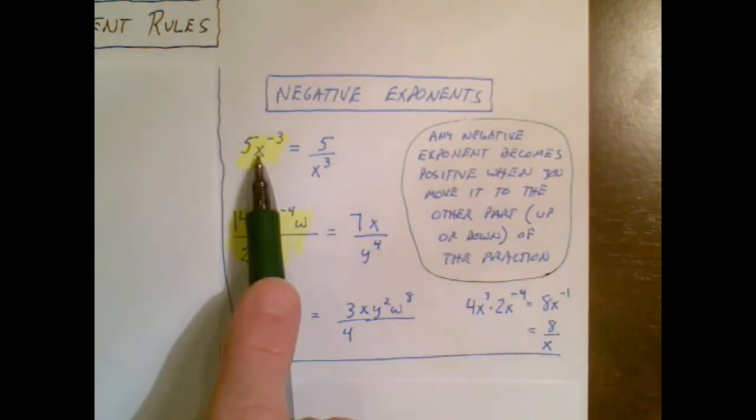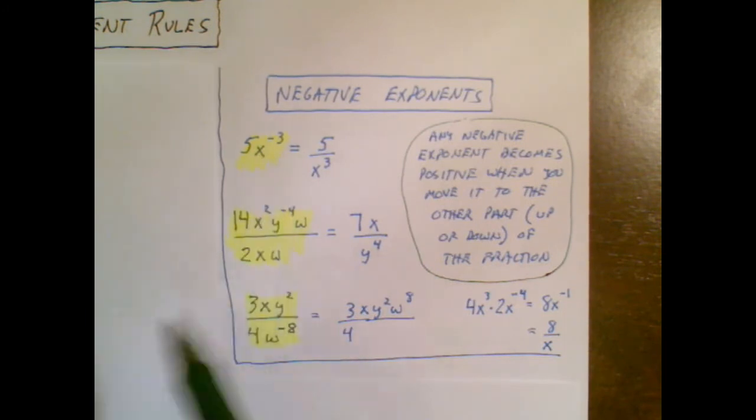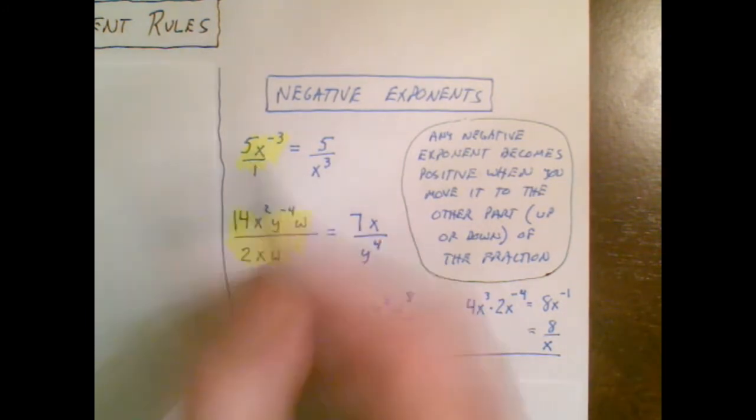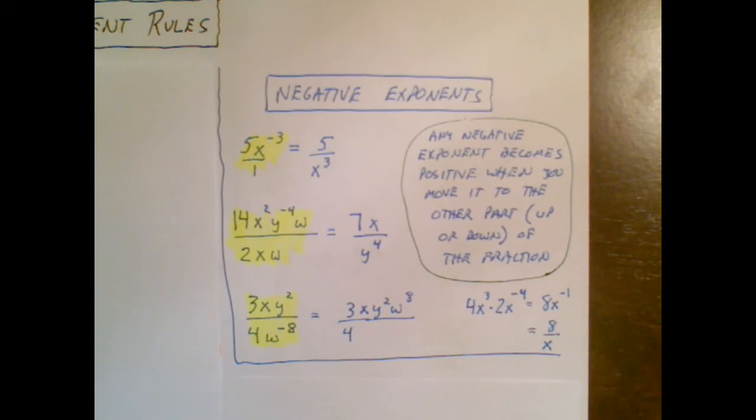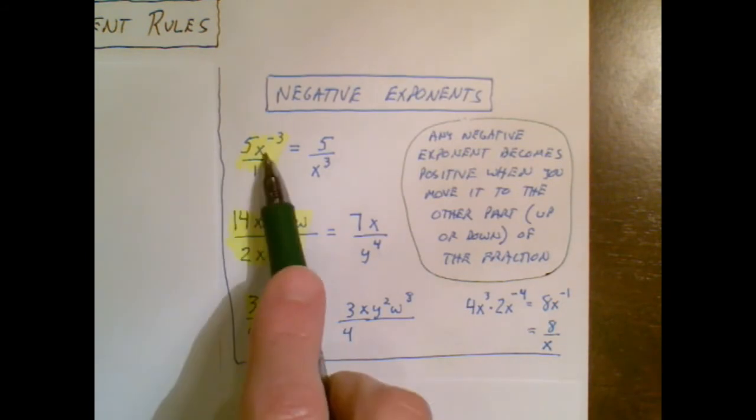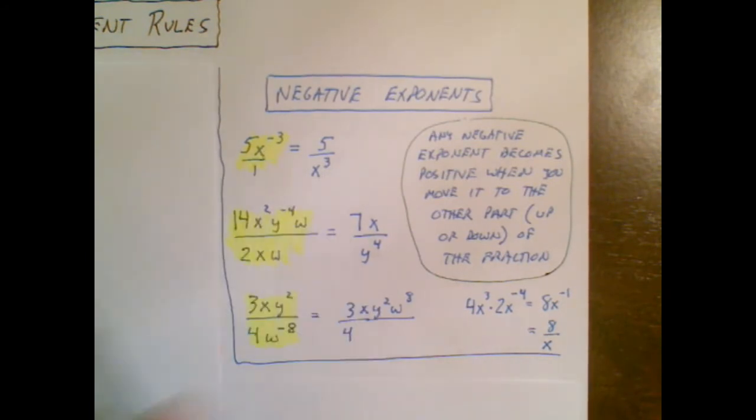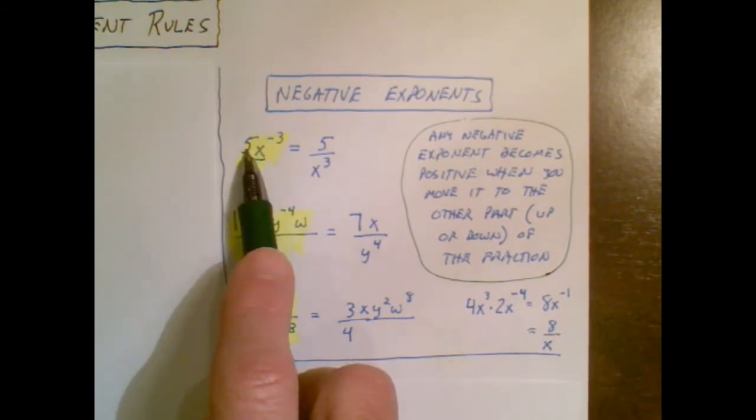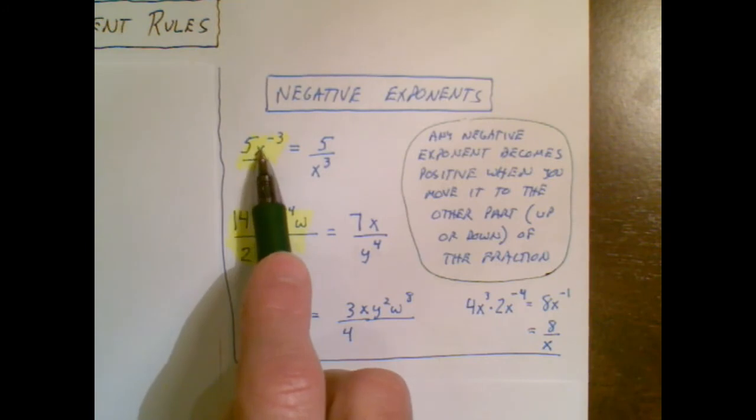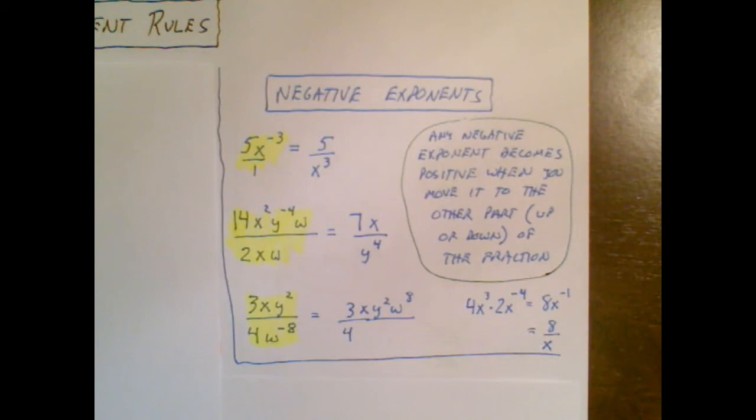For example here's a negative exponent and this is an enumerator. You don't see it as a numerator but if you put a 1 there now you know it's an enumerator and you can always do that. So I move it to the denominator and call it positive and that's it. I don't do anything else. That 5 does not have anything to do with the x to the negative 3 in this case. I just move the problem part. That'll become more evident here.